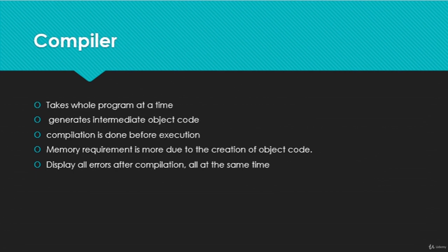Next, we will move ahead to the compiler and interpreter — two of the most common concepts that explain how functionalities work inside a computer language. A compiler takes the whole program at once, compiles it against errors — checking for wrong code, missing semicolons, and other issues — and displays all errors at once. You have to remove all those errors so that the program compiles successfully and can give instructions to the computer system. The major functionality of a compiler is compiling the entire program in one go.